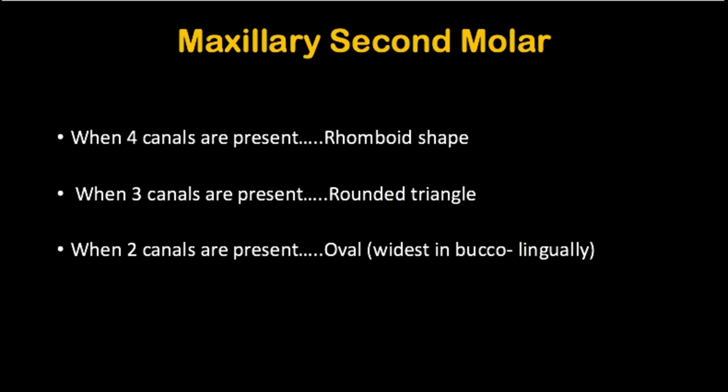For the maxillary first molar, which almost always has four canals, the access cavity will be in the shape of a rhomboid because of the presence of four canals. For the maxillary second molar, if three canals are present it will be in the shape of a rounded triangle; if there are only two canals present, it will be in the shape of an oval that is wide buccolingually.